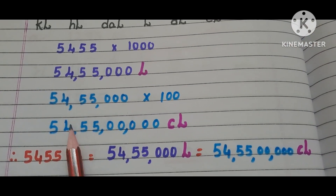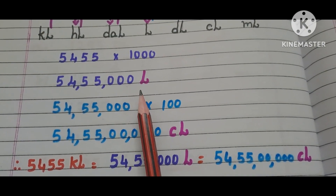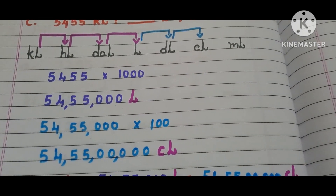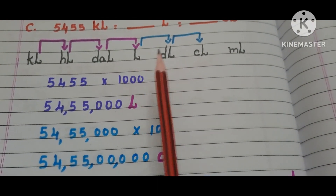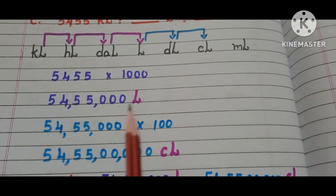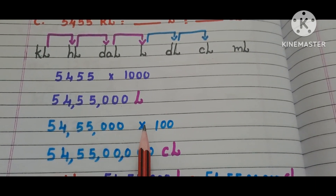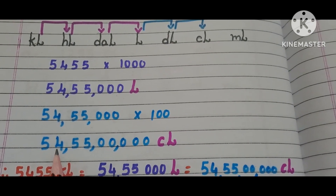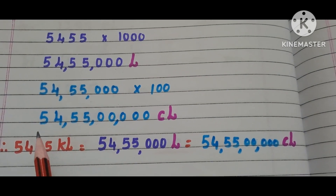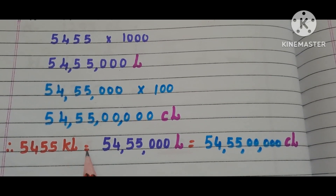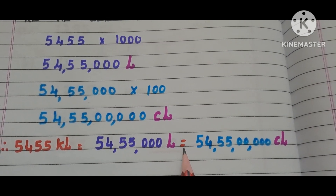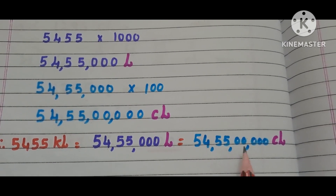Now, convert 54,55,000 liters into centiliters. Where are liters in the table? Here it is. Where are centiliters? We have to move from left side to right side 2 steps in the table. So, we have to multiply with 100. Then 54,55,000 into 100 becomes 54,55,00,000 centiliters. Therefore, 5,455 kiloliters is equals to 54,55,000 liters and that is equals to 54,55,00,000 centiliters.